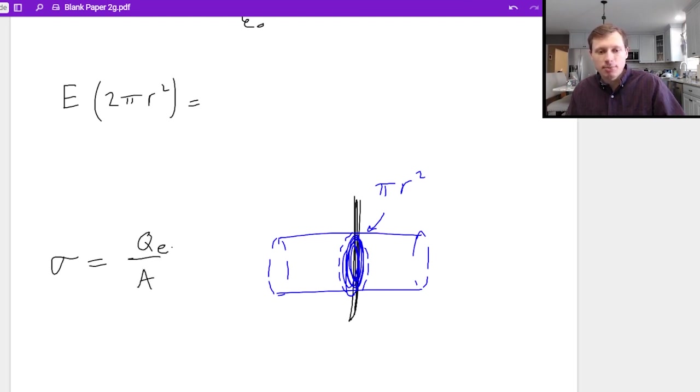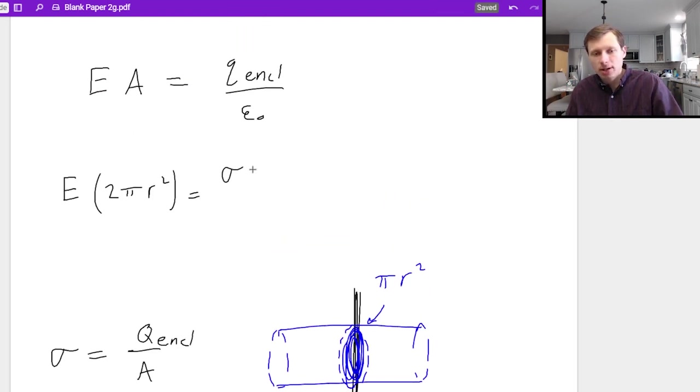I'm saying q is my q enclosed that I'm solving for. So I just need to multiply both sides by the area. So that means charge enclosed is equal to sigma times my area which I just said is pi r squared. And that's what I'm going to write in the numerator. Sigma pi r squared divided by epsilon naught.